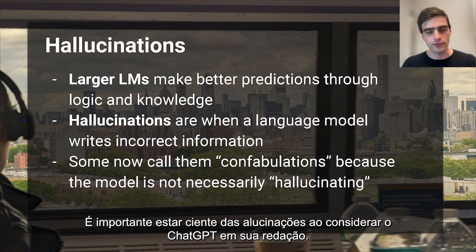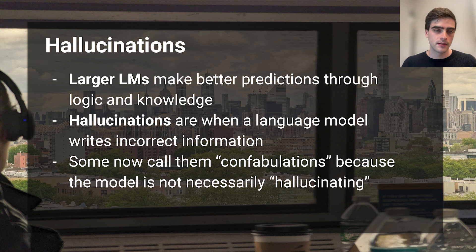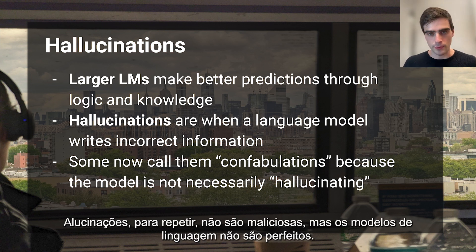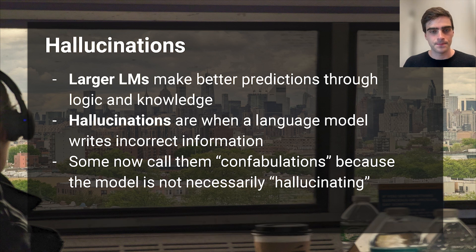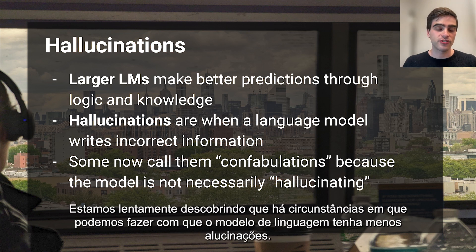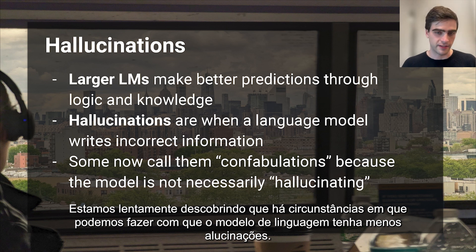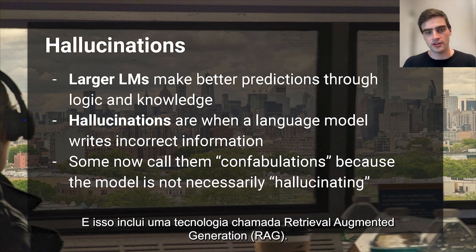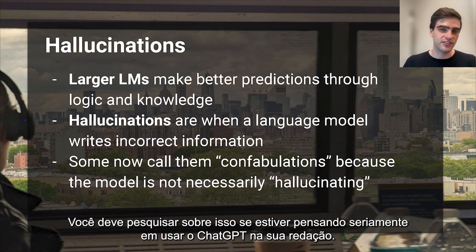It's important to be aware of hallucinations when considering ChatGPT in your newsroom. Hallucinations, to repeat, are not malicious. But language models are not perfect. We're slowly figuring out that there are circumstances where we can get the language model to hallucinate less, and this includes a technology called Retrieval Augmented Generation. You should look into it if you're seriously considering using ChatGPT in your newsroom.